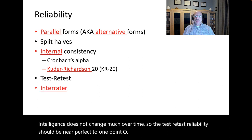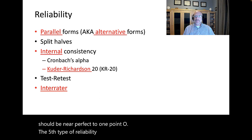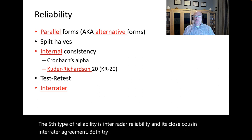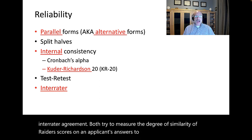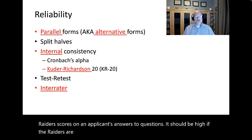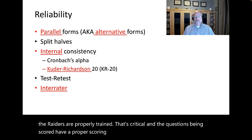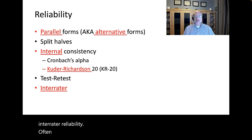The fifth type of reliability is inter-rater reliability and its close cousin inter-rater agreement. Both try to measure the degree of similarity of raters' scores on an applicant's answers to questions. It should be high if the raters are properly trained and the questions being scored have a proper scoring rubric. Calculation of inter-rater reliability often involves complex calculations using the intra-class correlation coefficient. But inter-rater agreement is usually just a percentage agreement, which is really kind of easy to calculate.